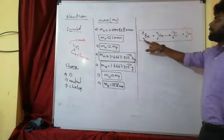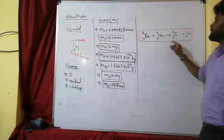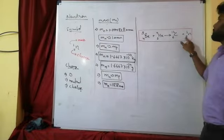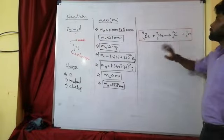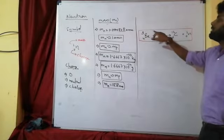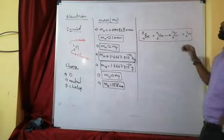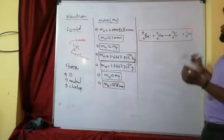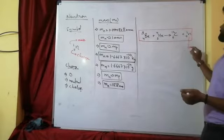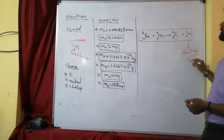The reaction is: Be₄⁹ + He₂⁴ → C₆¹² + n₀¹. Checking the atomic numbers: 4+2=6 (carbon). Checking the mass numbers: 9+4=13, and 12+1=13. The remaining particle with mass 1 and charge 0 is the neutron. This was the nuclear reaction in which the neutron was discovered.